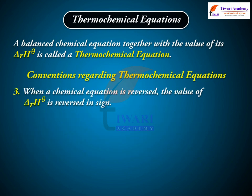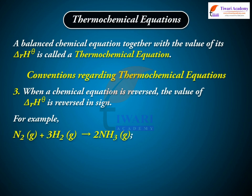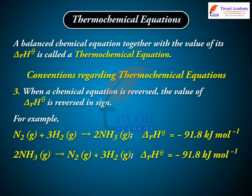When a chemical equation is reversed, the value of delta-R H theta is reversed in sign. For example: N2(g) + 3H2(g) → 2NH3(g), delta-R H theta = −91.8 kJ/mol. Reversed: 2NH3(g) → N2(g) + 3H2(g), delta-R H theta = +91.8 kJ/mol.